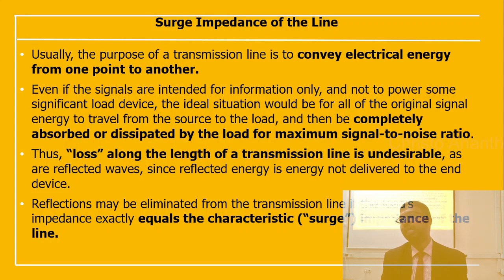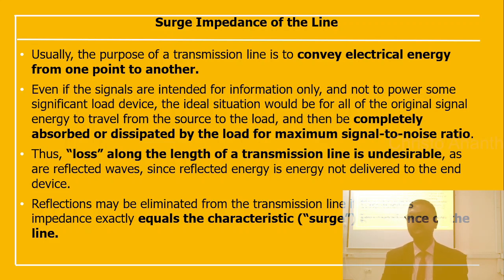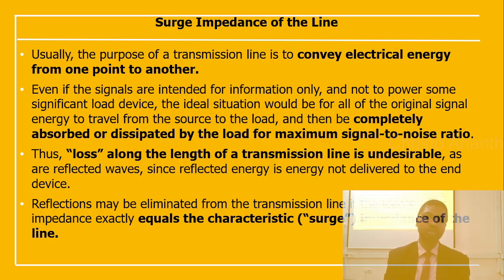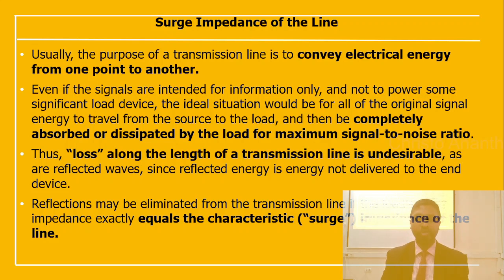The purpose of a transmission line is to convey electrical energy from one point to another. The ideal situation is for all original signal energy to travel from source to load and be completely absorbed by the load for maximum signal-to-noise ratio. Reflections can be eliminated if the load's impedance is exactly equal to the characteristic impedance — or surge impedance — of the line.